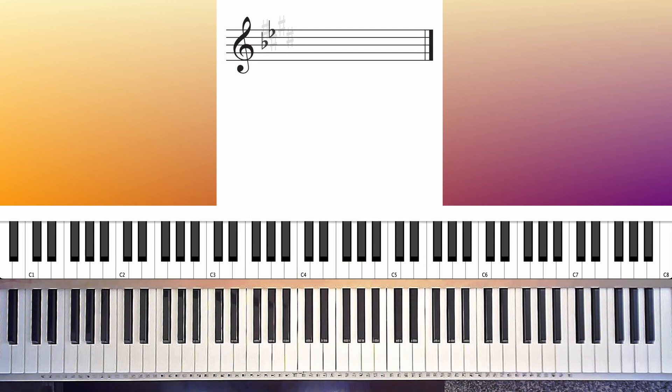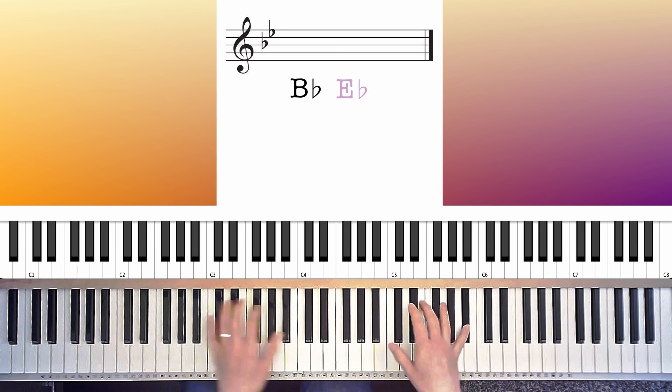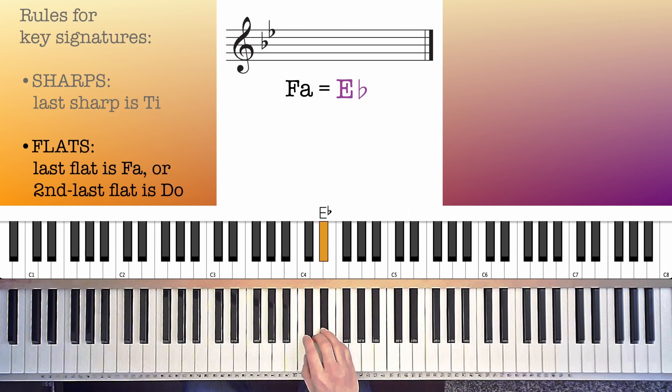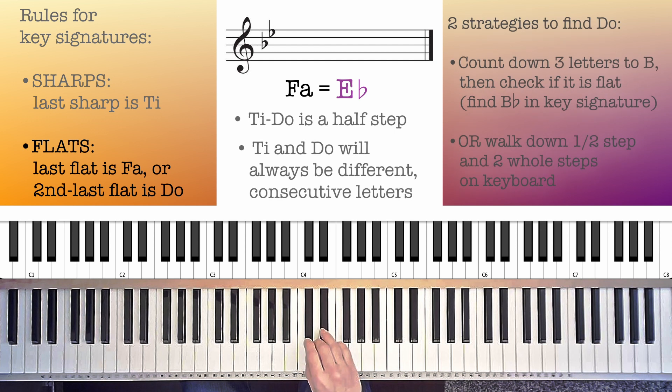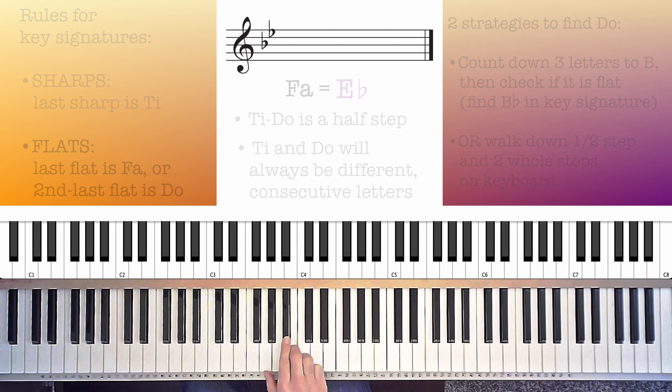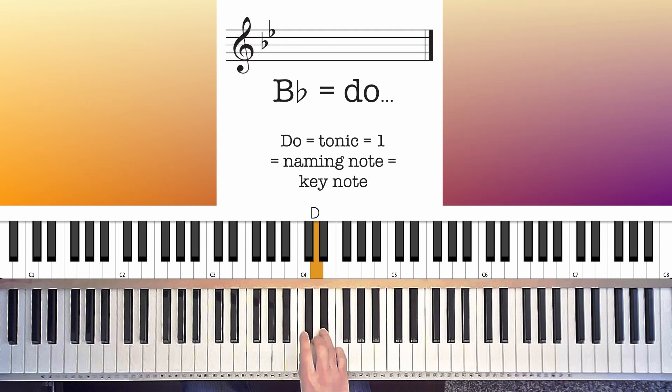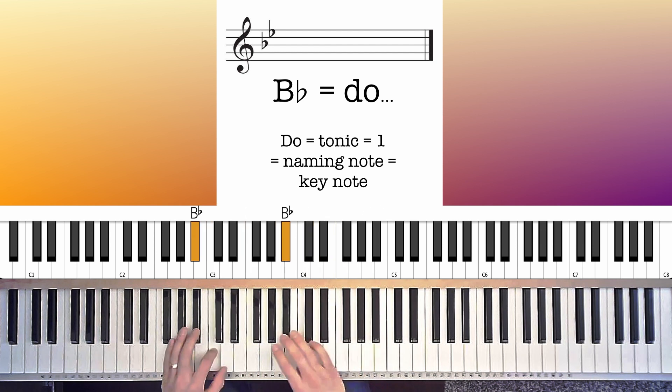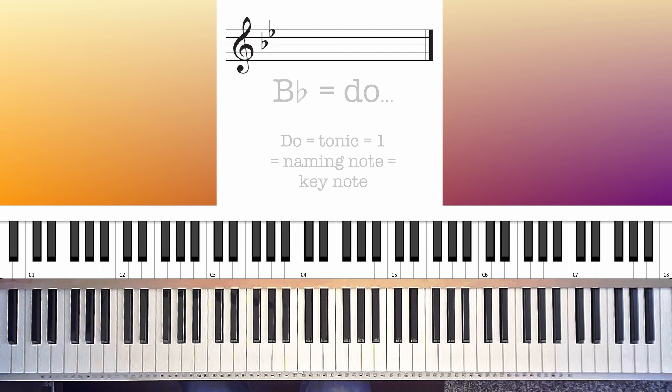Here's a flat key. The flats are B flat and E flat. The rule says the last flat is Fa, so E flat is Fa. You walk down Fa, Mi, Re, Do. We'll have the letter name D for Mi. We'll have the letter name C for Re, and the letter name B for Do. Now we check that B against the key signature, and that B is a B flat. This is the key of B flat major. Alternatively, we could find this through the other rule that the second to last flat is Do, B flat is Do.